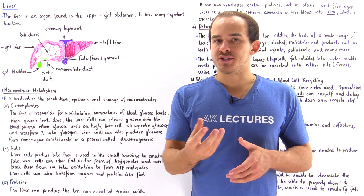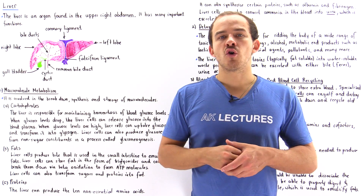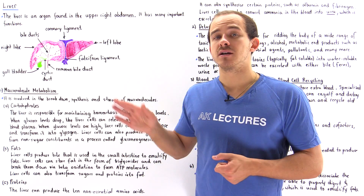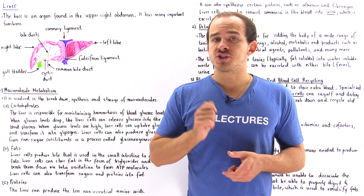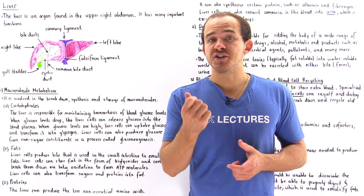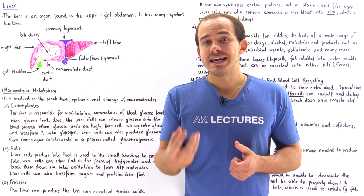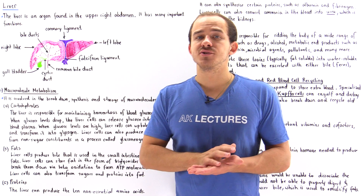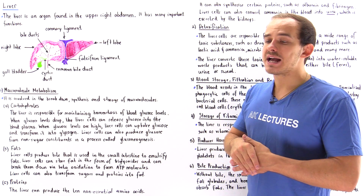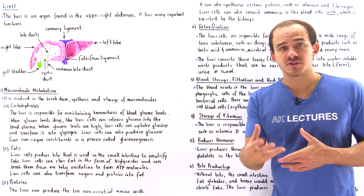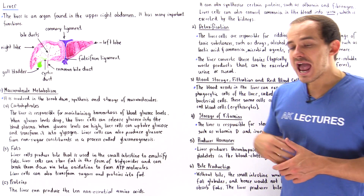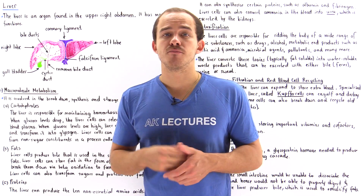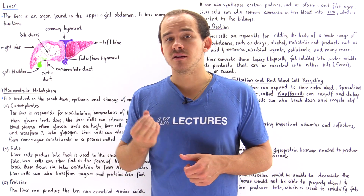The pancreas releases a hormone known as insulin, and insulin acts on the liver cells to cause those liver cells to absorb as much glucose as needed to maintain a proper concentration of glucose inside the blood. Liver cells absorb the glucose and transform it into the polymer form known as glycogen.